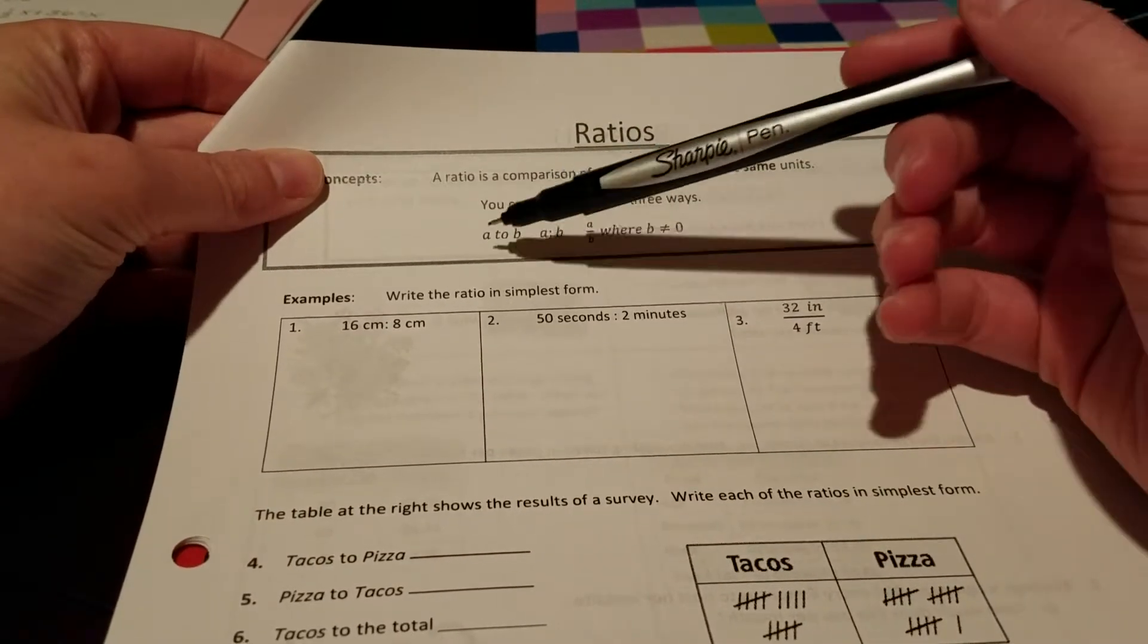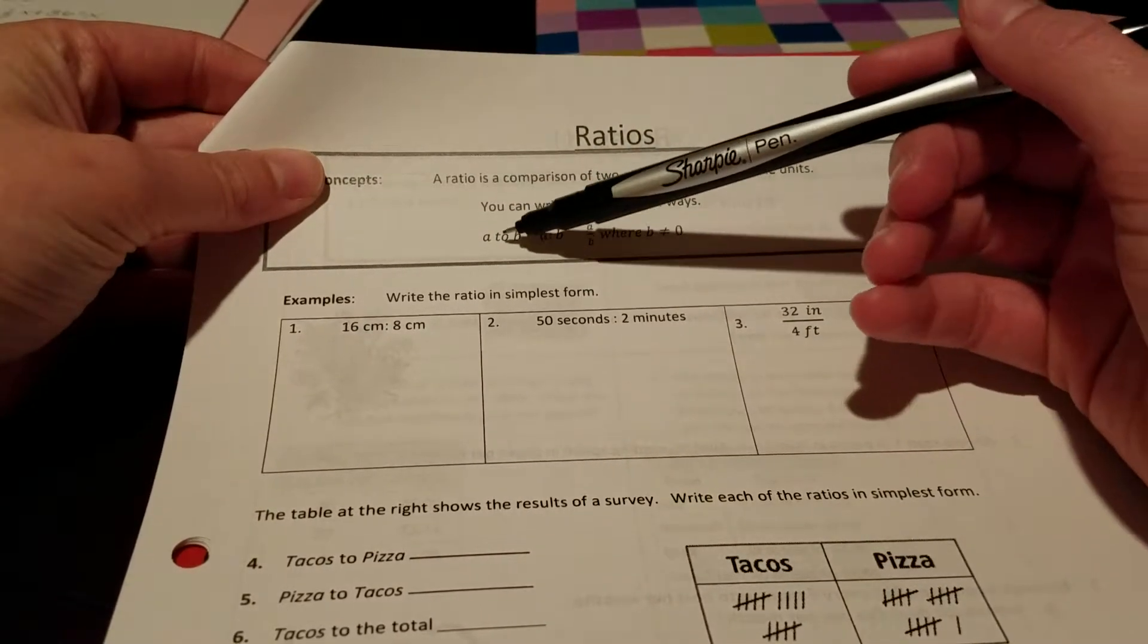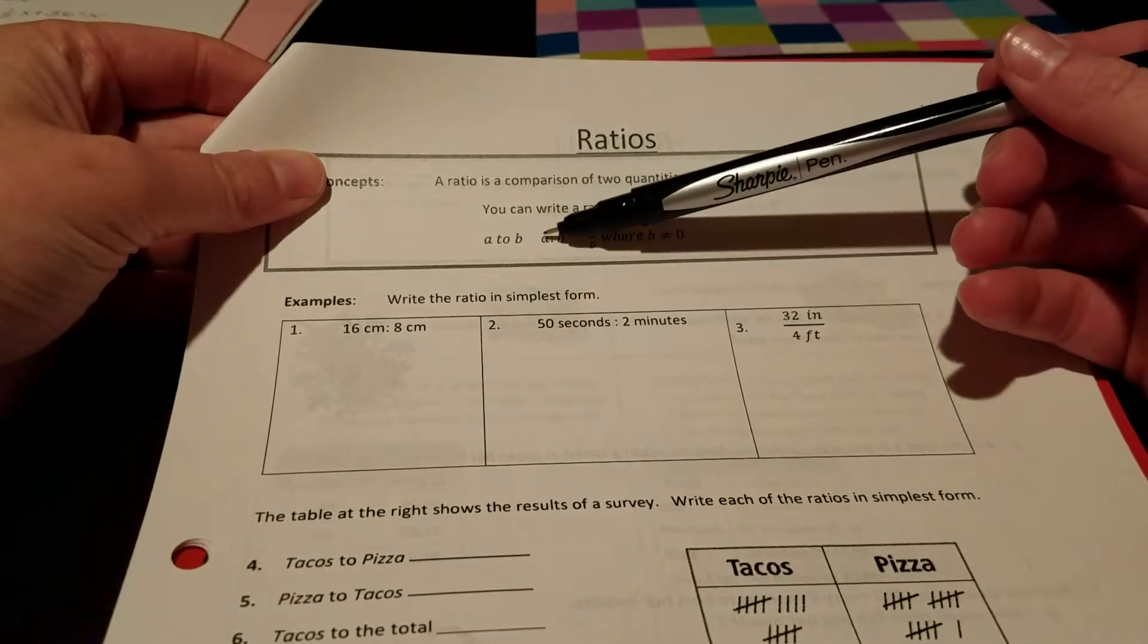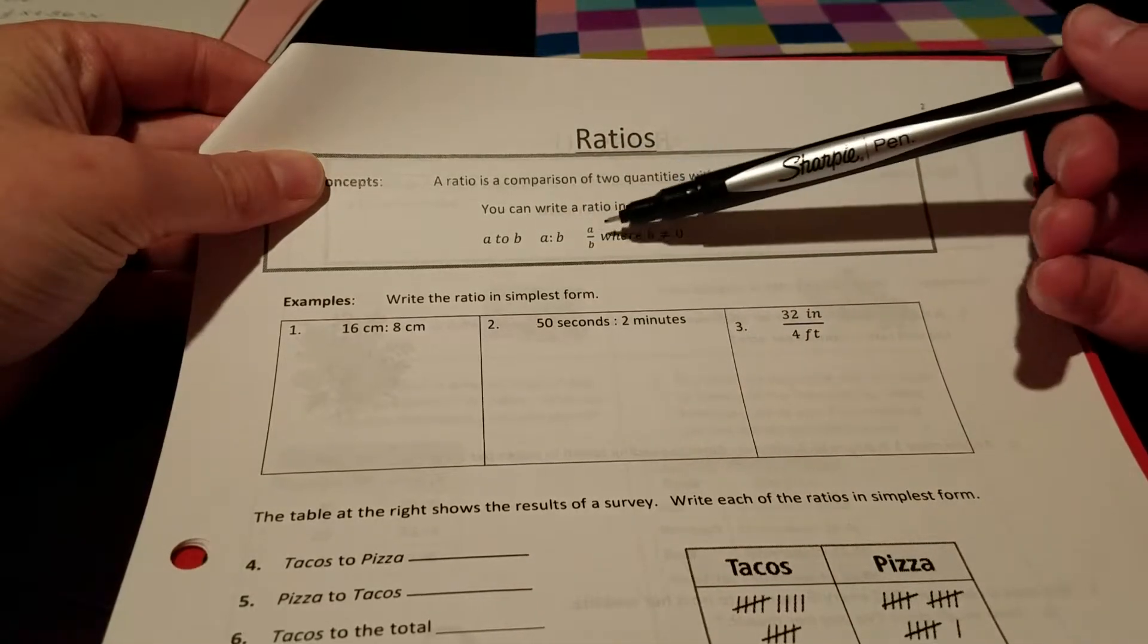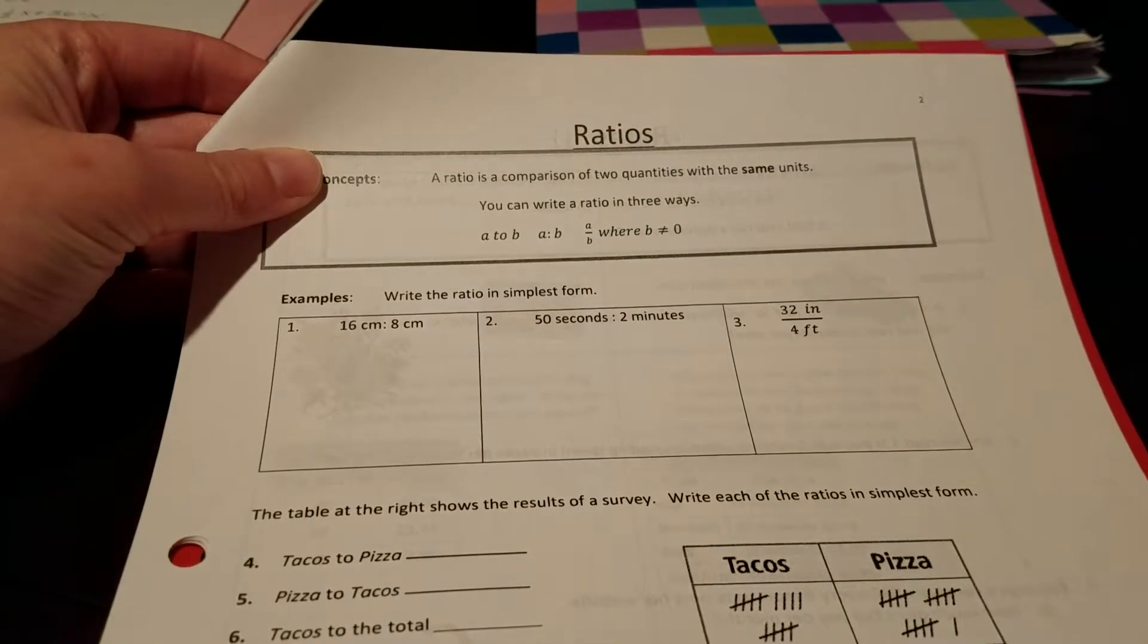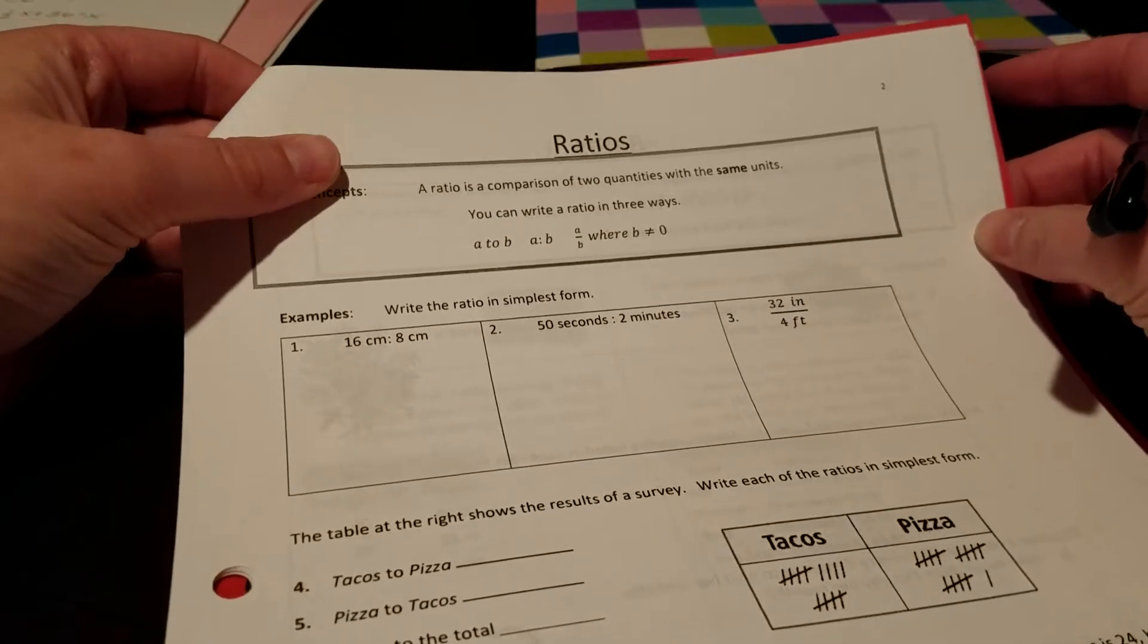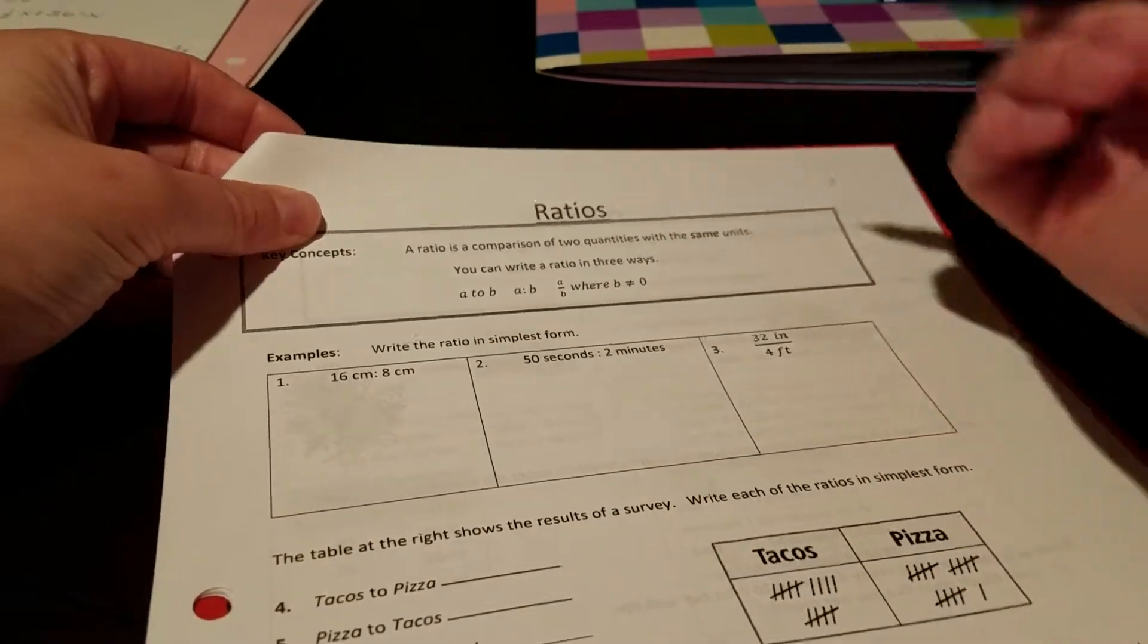You can write a ratio in three ways. You can write it as a to b, so with the word to. You can write it as a colon b, with the colon, or you can write it as a over b as a fraction, where b is not equal to zero, so the denominator can't be zero.